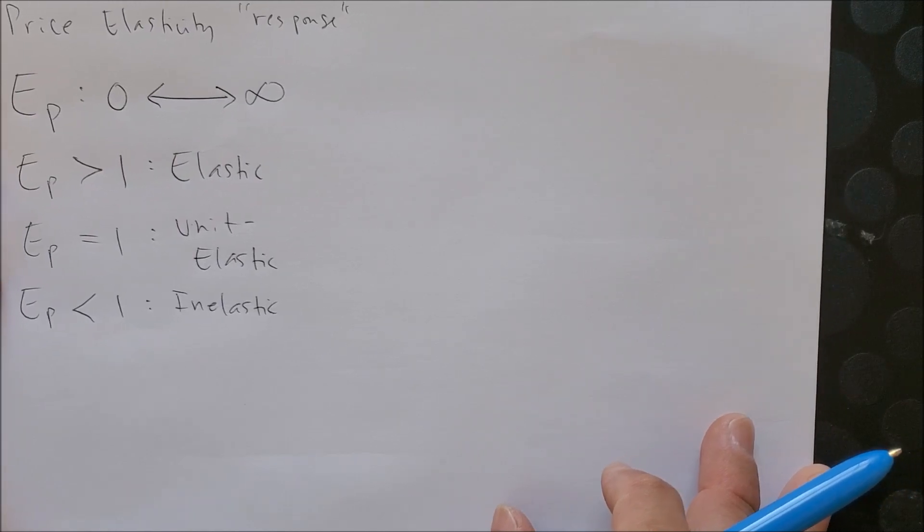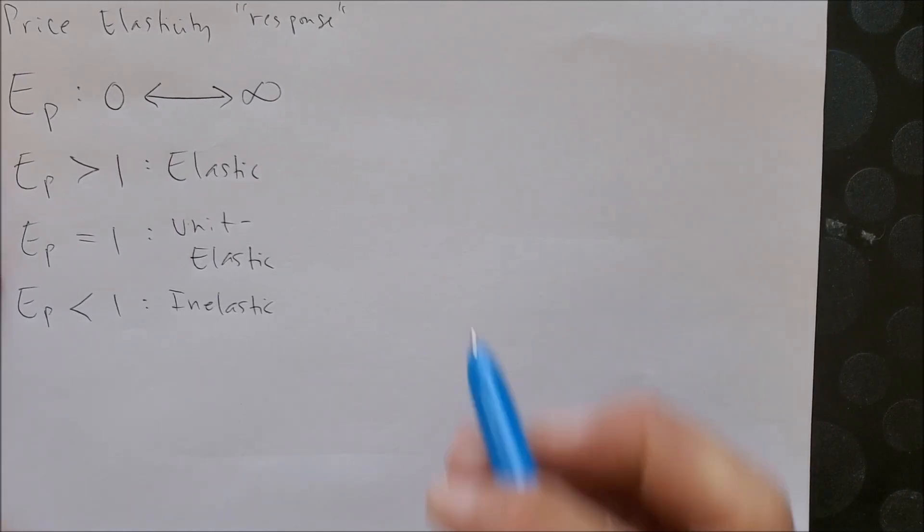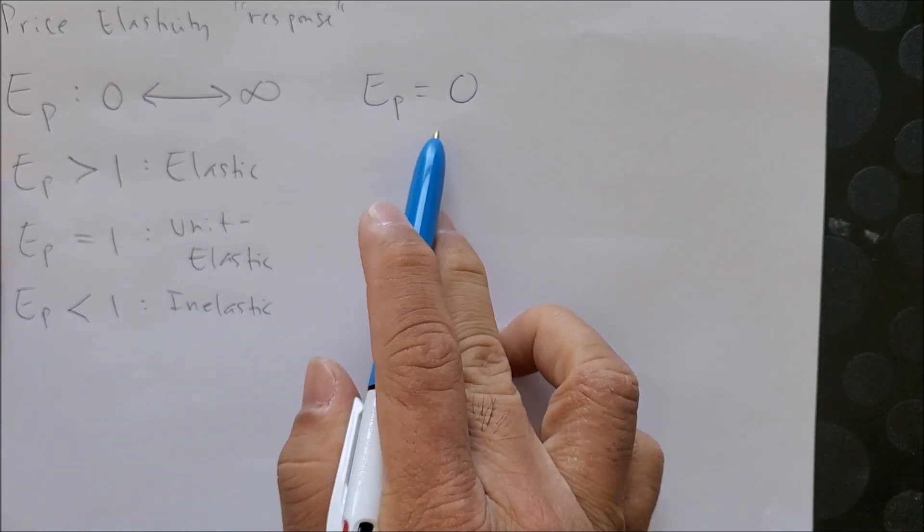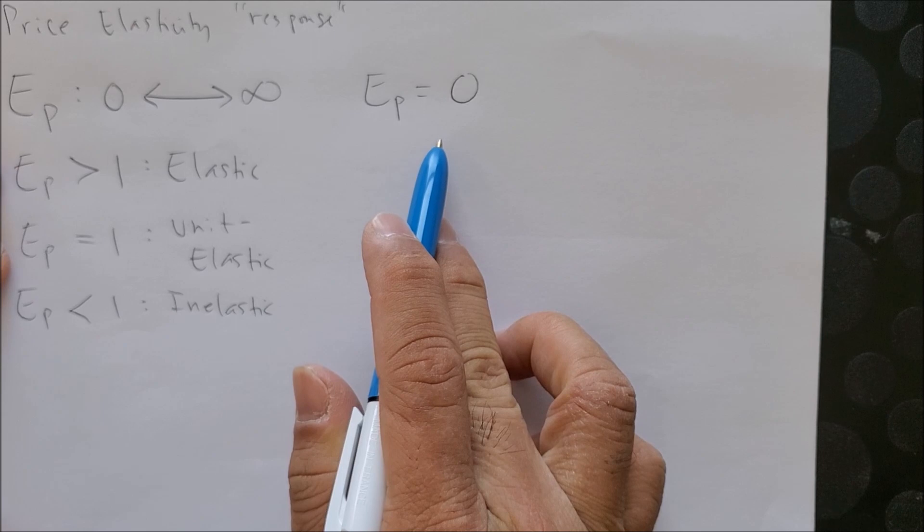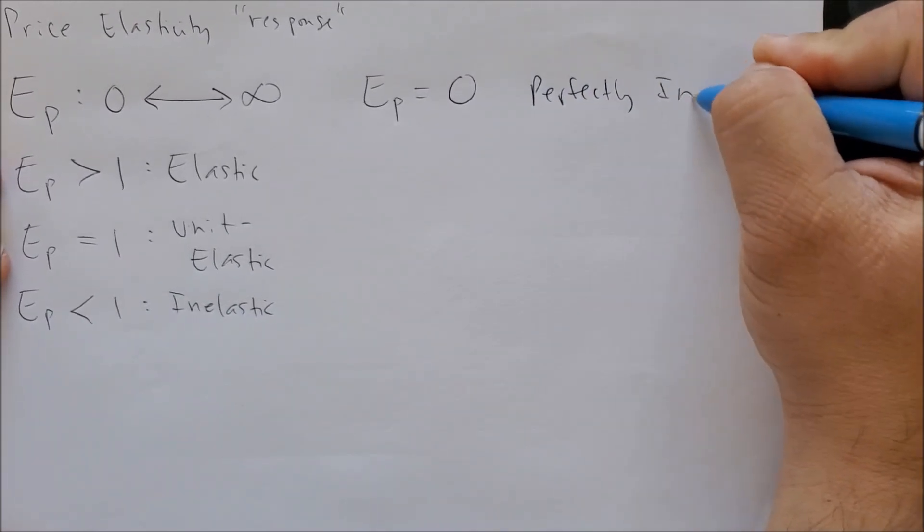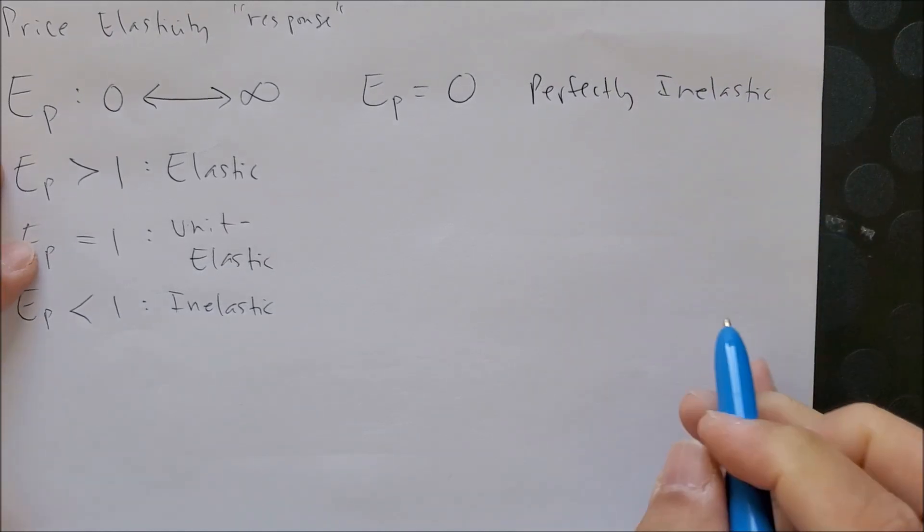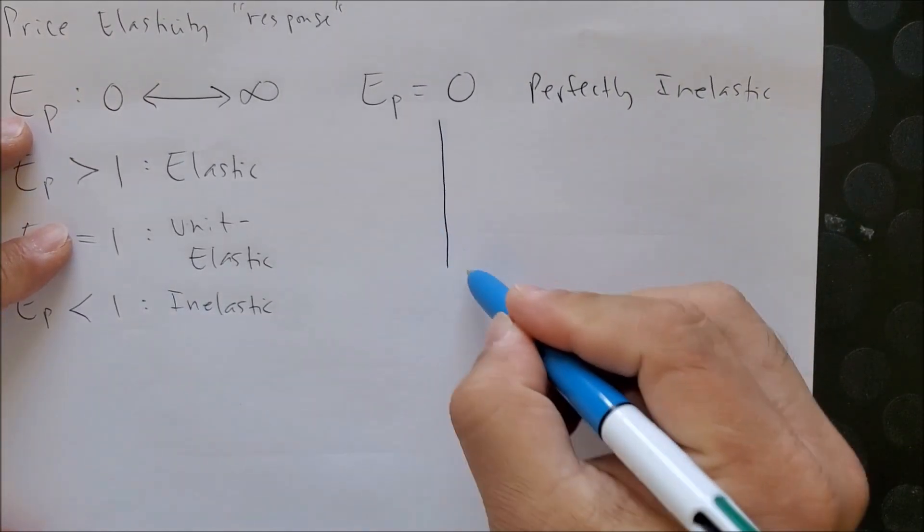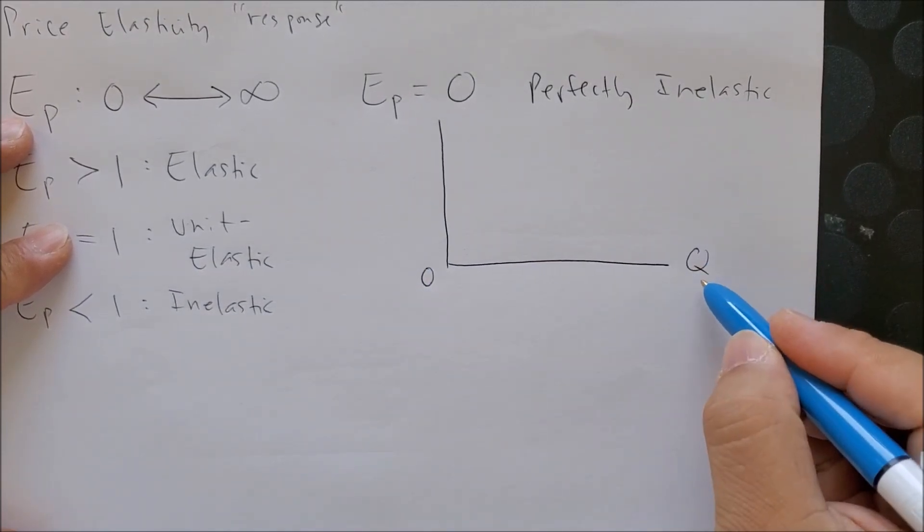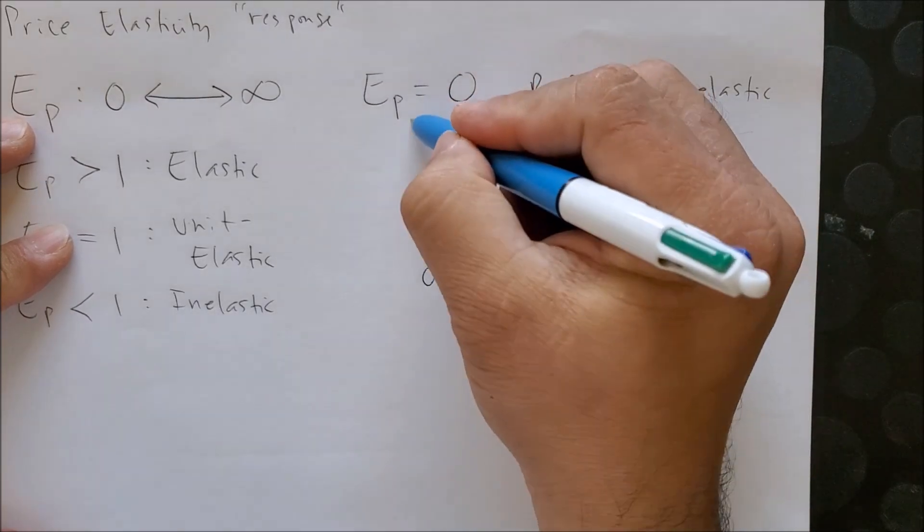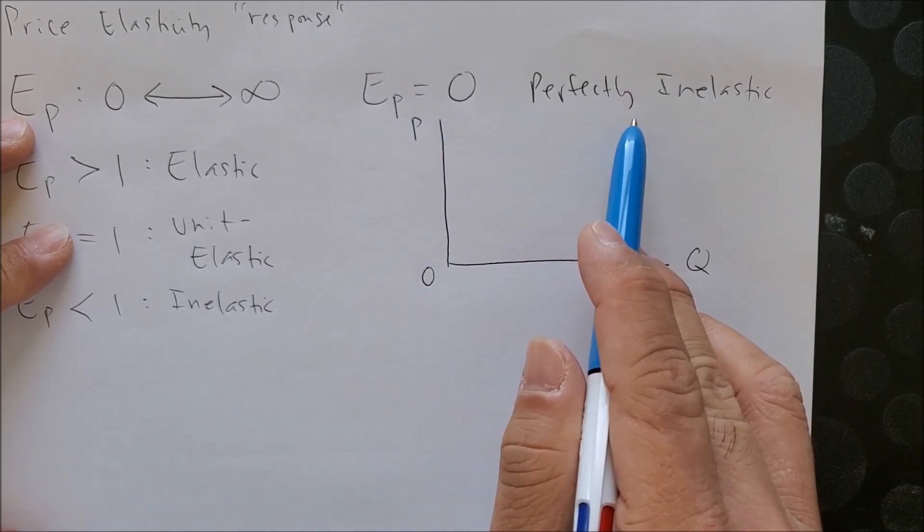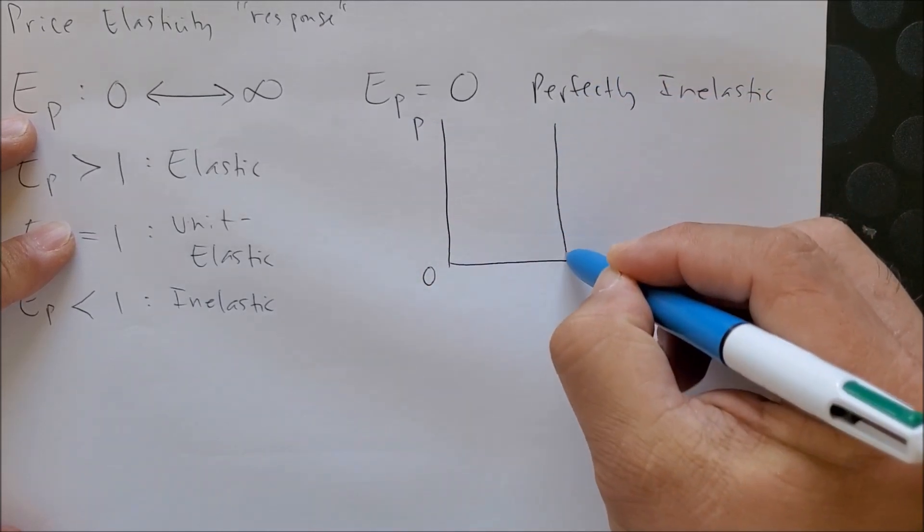Now I want to show you two extreme examples of price elasticity. The first one is when E sub p equals zero. We can call this perfectly inelastic. This is shown on a graph where we use the x-axis to represent quantity of goods, the y-axis to represent the price of goods, and when we have zero, a perfectly inelastic curve, we have a vertical curve.